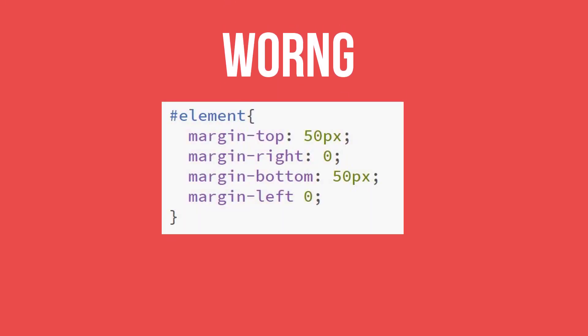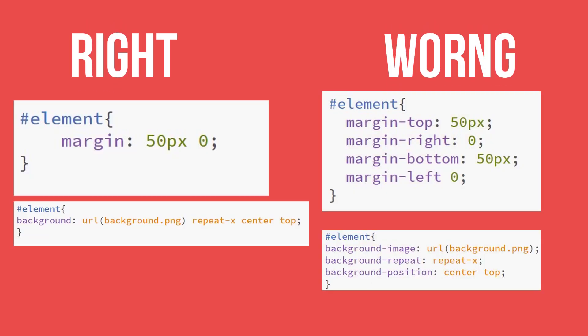Background-color, background-image, background-repeat — these are many different background properties. In our project, we can use margin shorthand for 4 properties, and padding shorthand for 4 properties. Instead of writing margin-left 5px, margin-right 10px, margin-bottom 5px separately, you can write it all in one shorthand. The order to write shorthand is top, right, bottom, left.